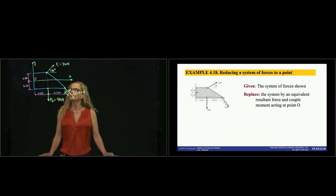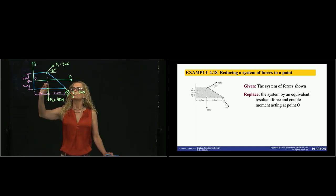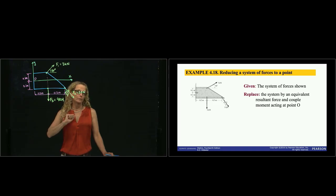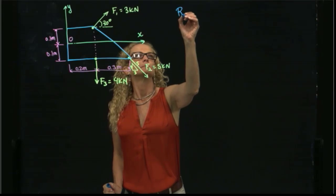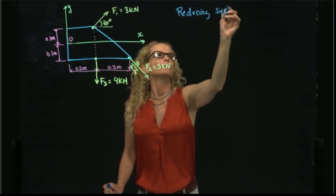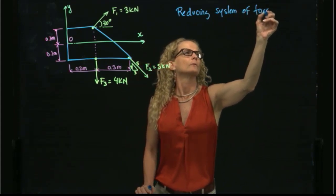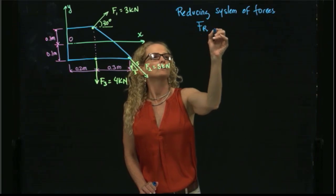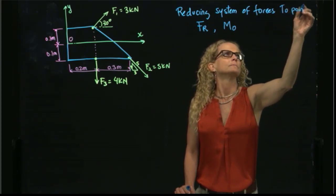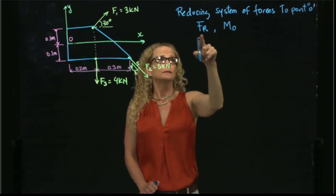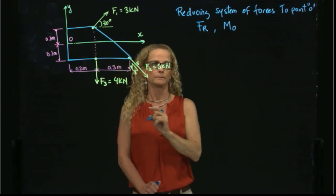We are in Chapter 4, and in this problem we are asked to reduce the system of forces to point O. That means to find an equivalent system of forces at point O. From the theory we know that reducing a system of forces means finding the resultant force and the moment with respect to that point, and those are vectors.